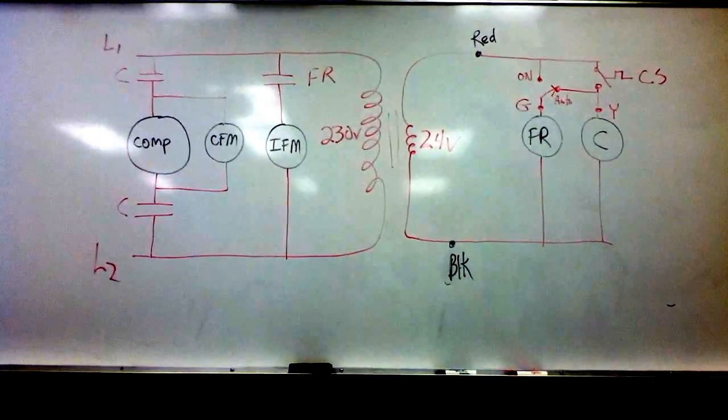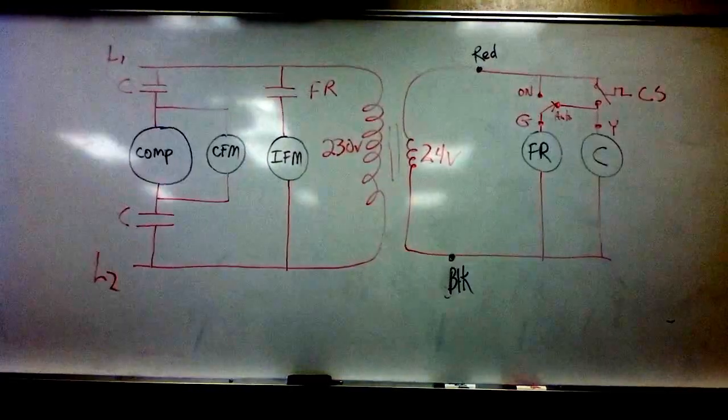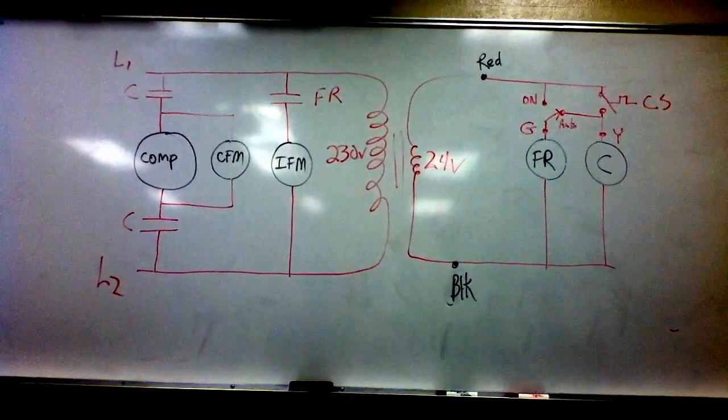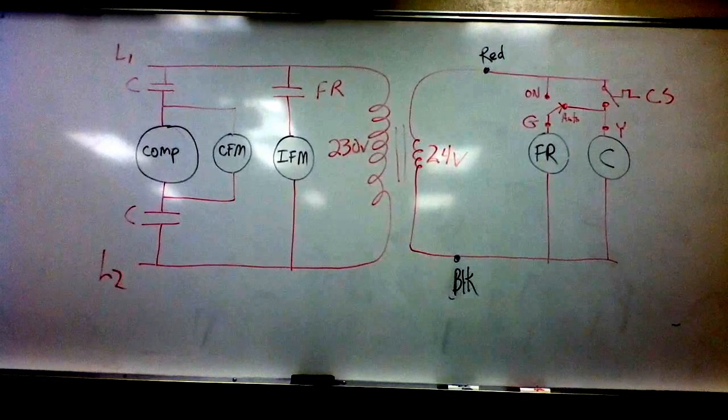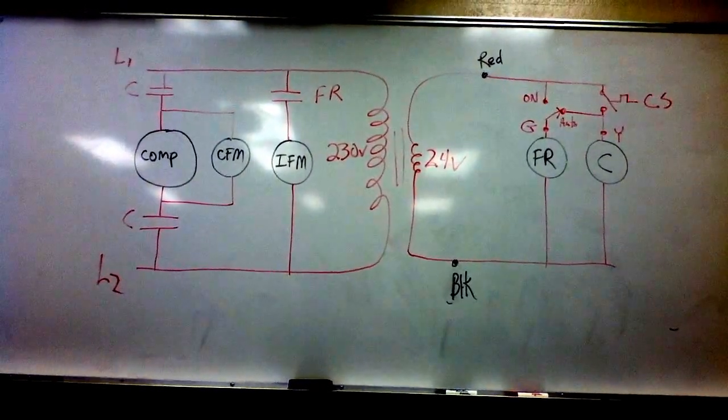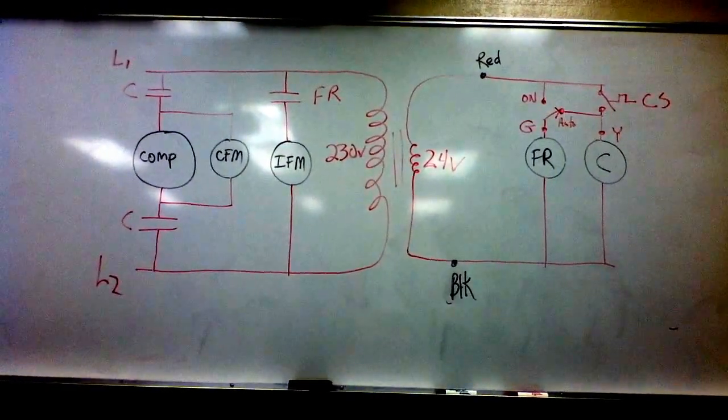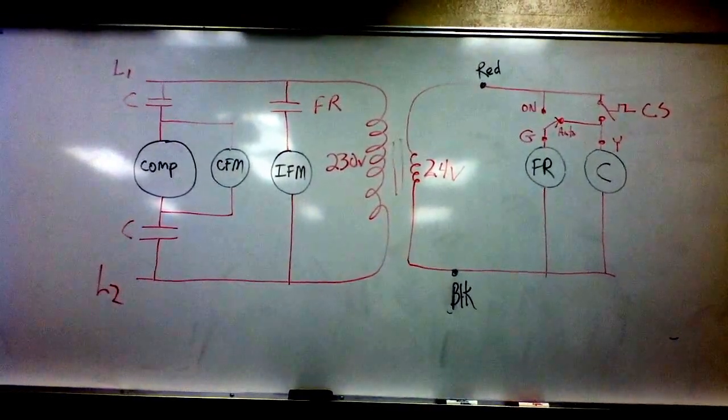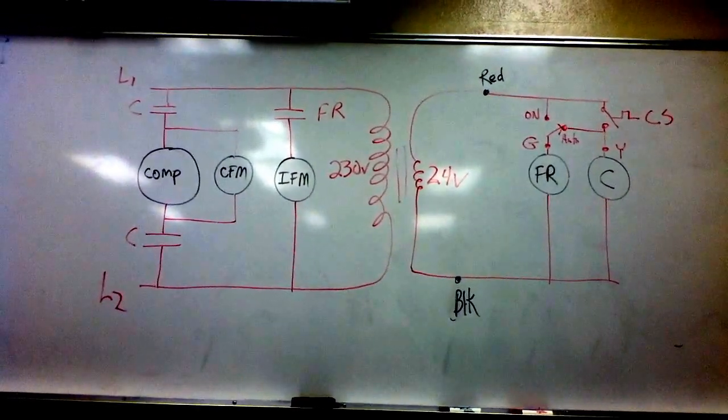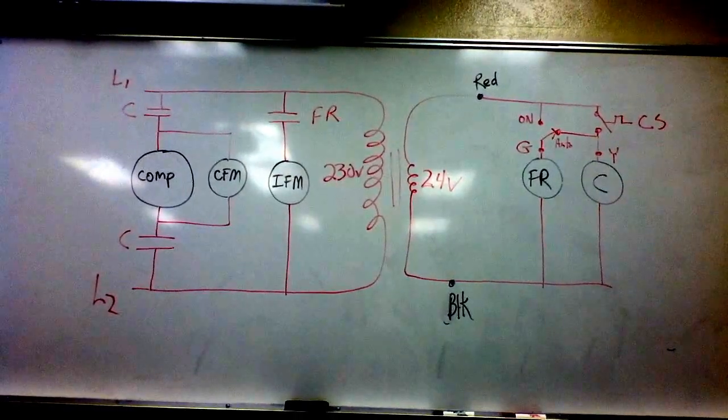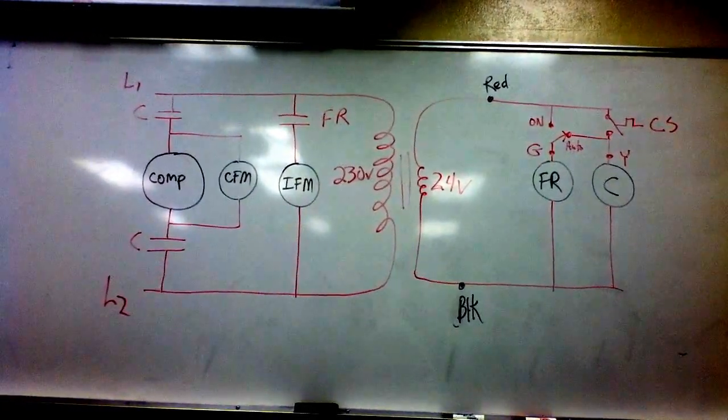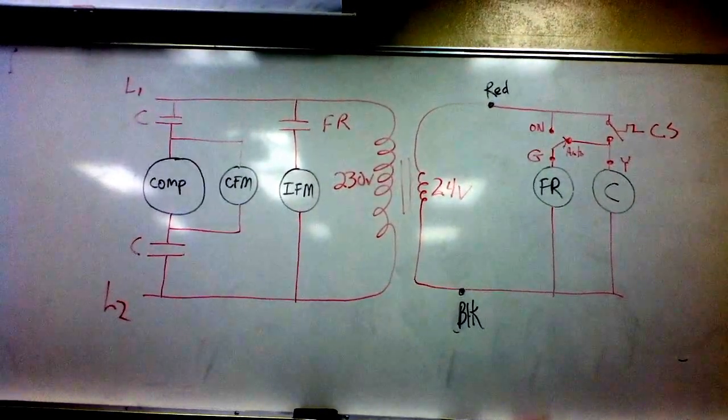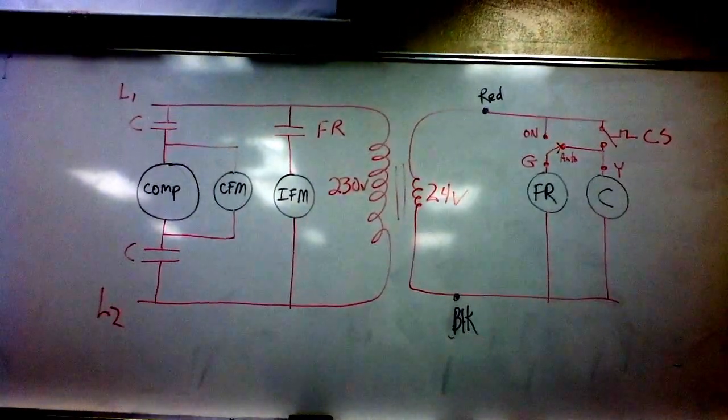Those are the terminals on the thermostat. G is the national electrical code for the fan circuit. R is the power into the stat. Yellow is the national color code for the cooling circuit or the contactor circuit in the heat pump. Where's R at? R is the red. BL is black. Again, what starts this?